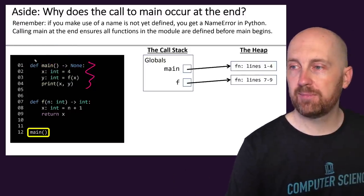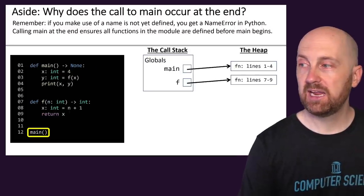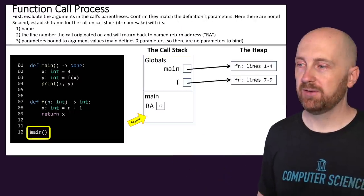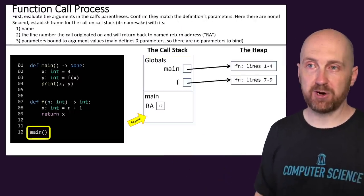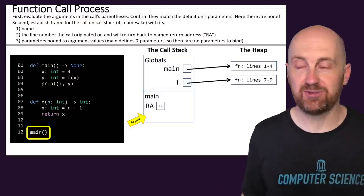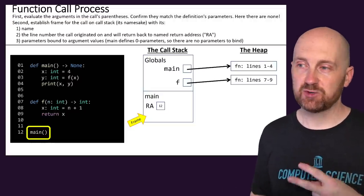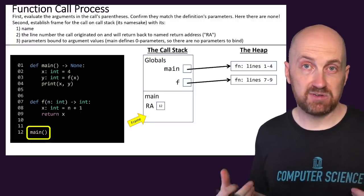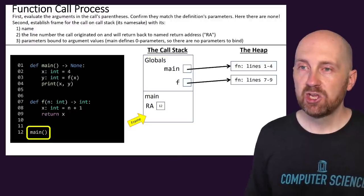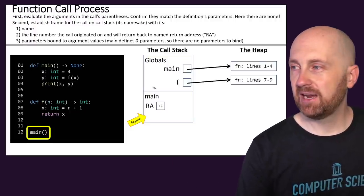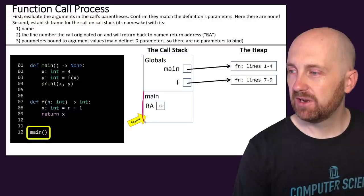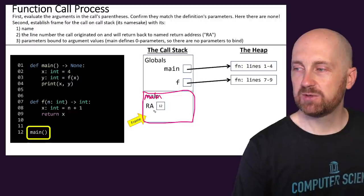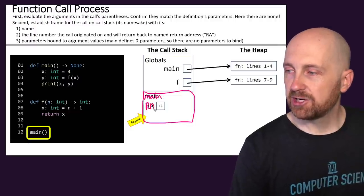So what happens when we reach a function call? This is the most important set of steps for this video. When you reach a function call, first you check: does this function even exist? Sure enough, it does. Then we add a frame to our call stack. We label the frame with the function's name — in this case, main — and we write in the return address, which is the line of code where that function call was evaluated. This function call occurred on line 12, so when this function returns, that's where we go back.